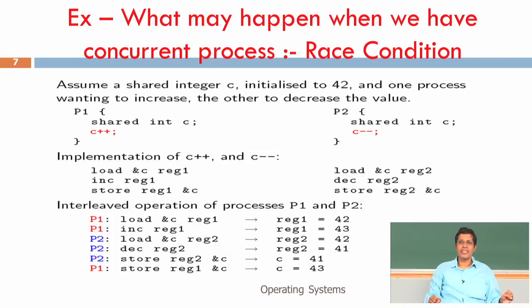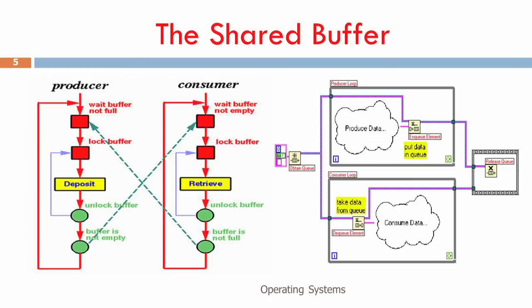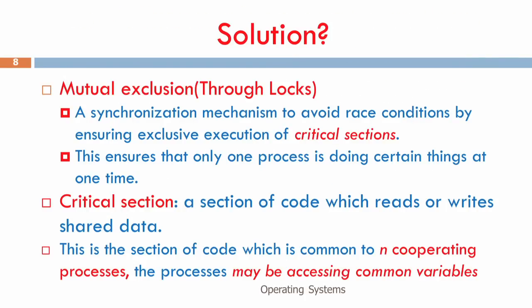The entire process synchronization revolves around how to achieve mutual exclusion. We have seen the notion of lock and unlock to get mutual exclusion. The need for mutual exclusion is to have a synchronization mechanism that avoids race conditions by ensuring exclusive execution of the critical section. This exclusive execution — where only one process can enter while others must wait — is among n cooperating processes.